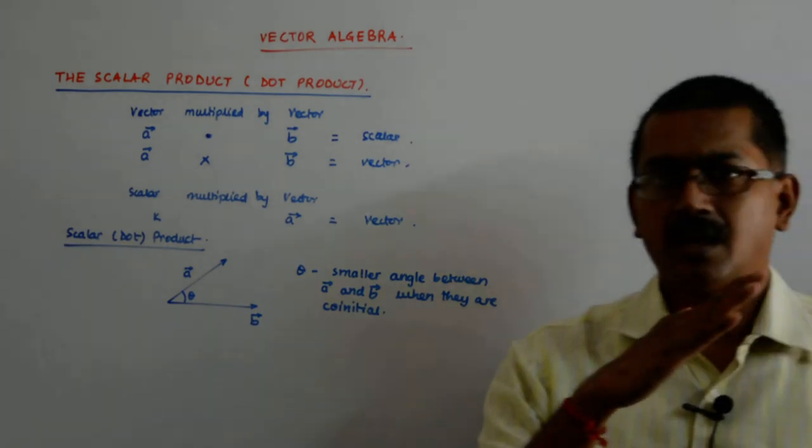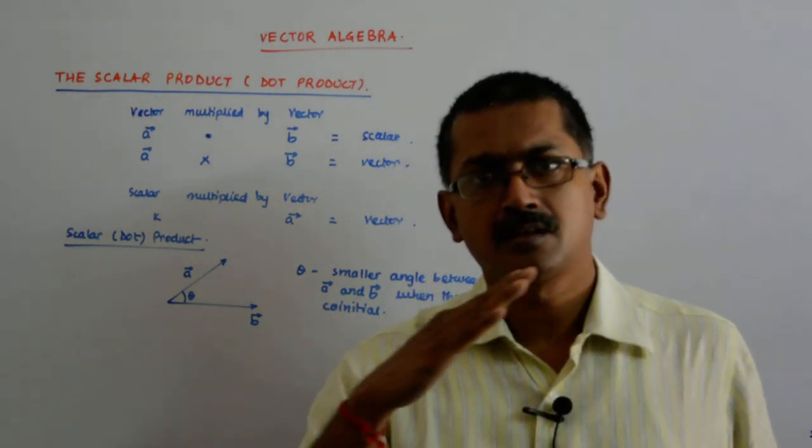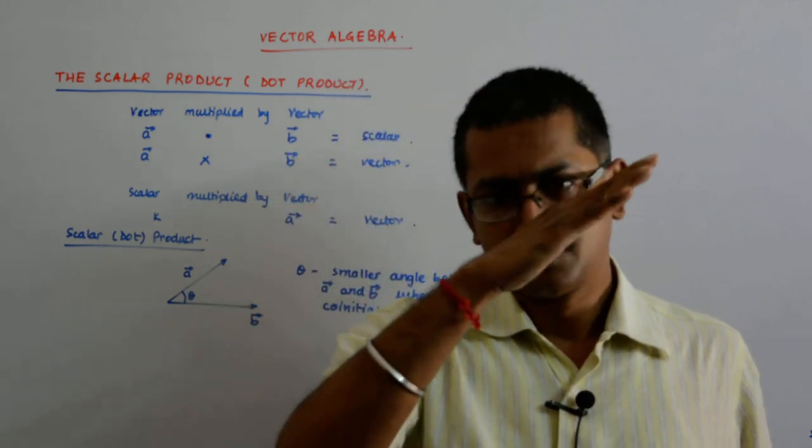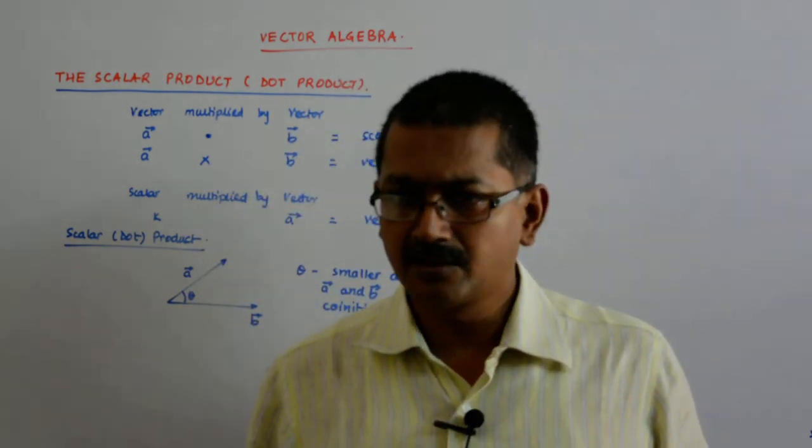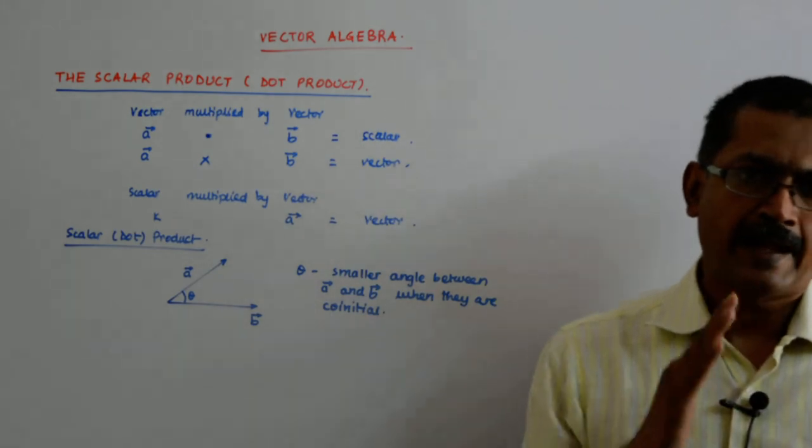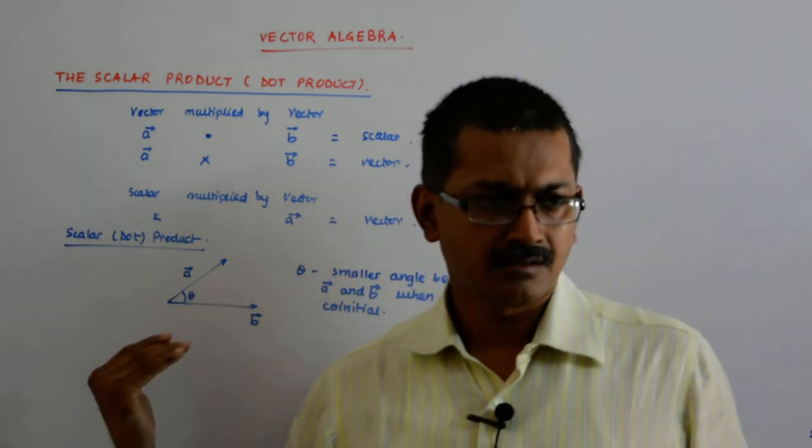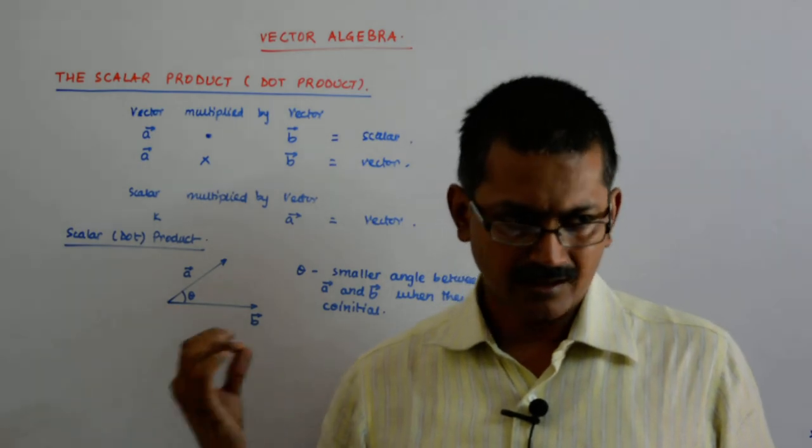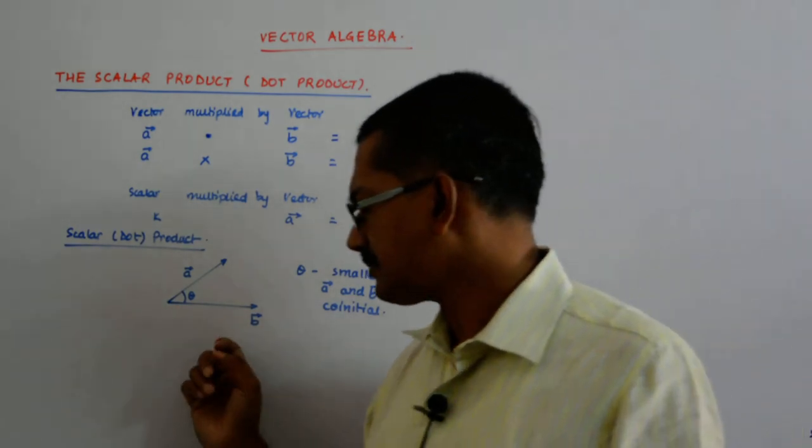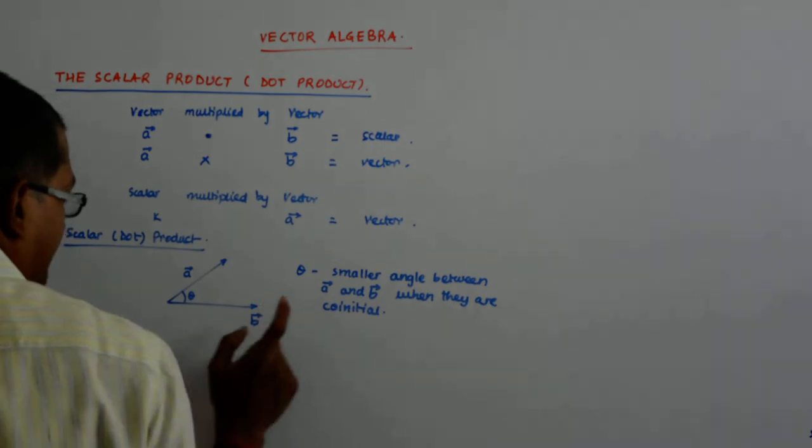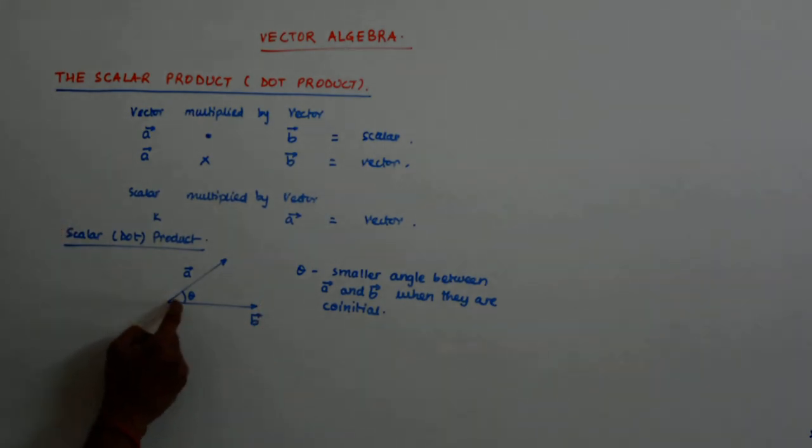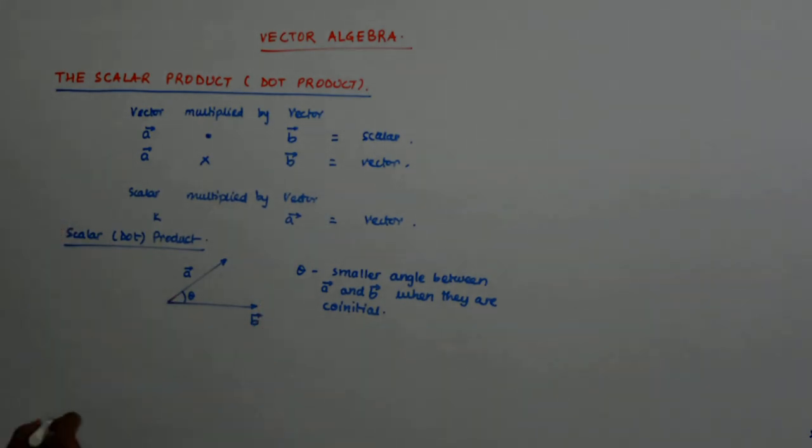Because we are free to move the vector parallel to itself anywhere. So, move one of the vectors parallel to itself and position it such that both their tails are together. So, they are co-initial. Theta is the smaller angle because now this is also the angle and that is also an angle.